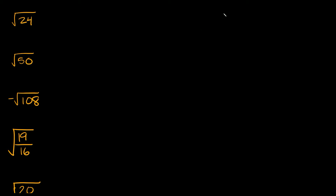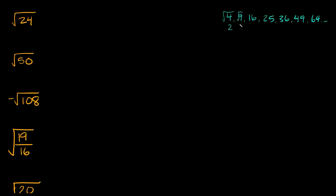Perfect squares are just numbers that you can take the square root of pretty easily. So for example: 4, 9, 16, 25, 36, 49, 64, and 81. These are all perfect squares because we can take easy square roots of them. So the square root of 4 is equal to 2, square root of 9 is equal to 3, square root of 16 is equal to 4 — it gives you a nice clean answer.